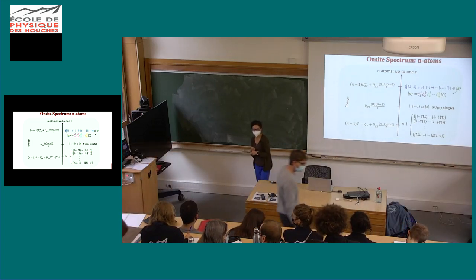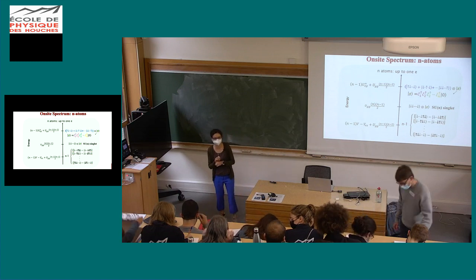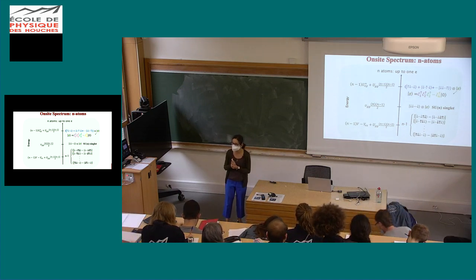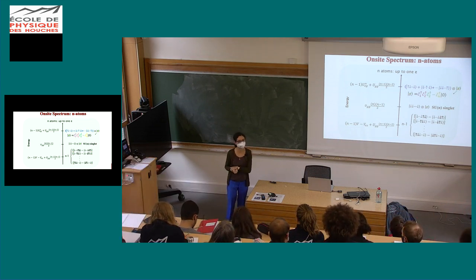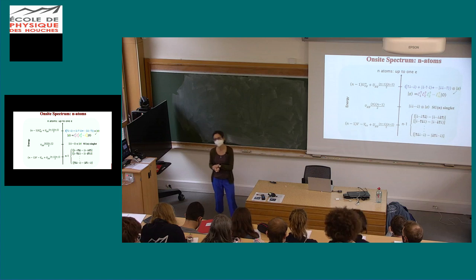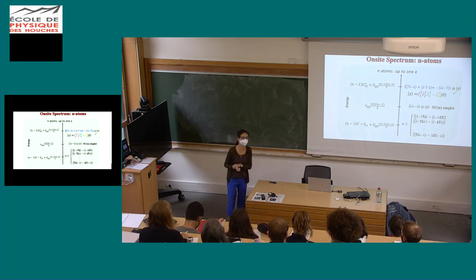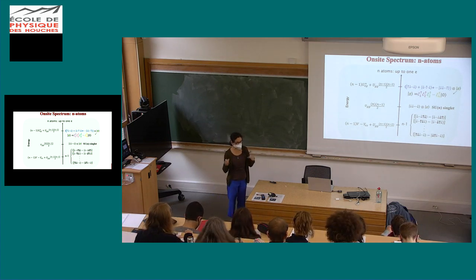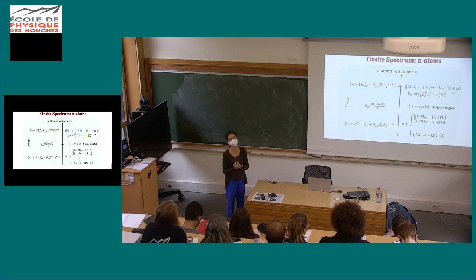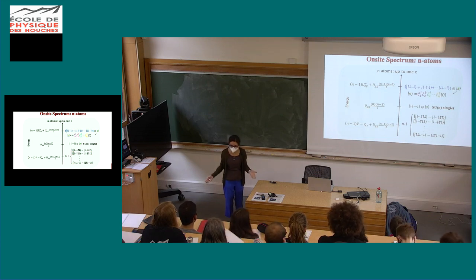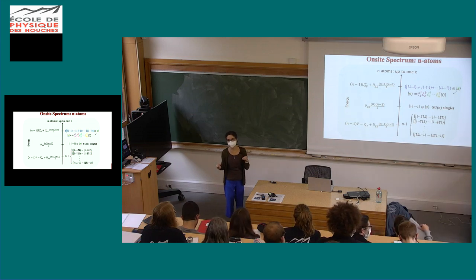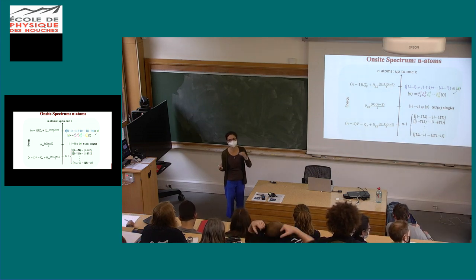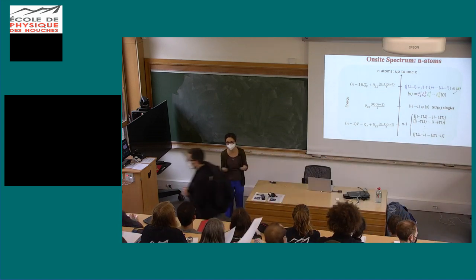We arrived at the last lecture about alkaline atoms. Let me start by reminding you what we covered at the end of the lecture last time. After a discussion of the 1D lattice clock, we went to the new realization of the experiment with a 3D lattice clock, where the experiment was able to prepare and select sites with one, two, three, four, and up to five atoms per site.